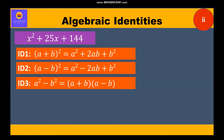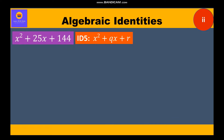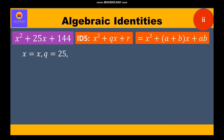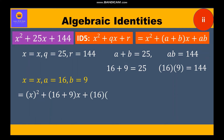Identity 3 has only two terms in the product whereas the given expression has three terms, so it is ruled out. Identity 4 involves three variables, so it is also ruled out. We are left with identity 5, with standard form x² + qx + r. Here q = 25 and r = 144. We need a + b = 25 and ab = 144. Since 16 + 9 = 25 and 16 × 9 = 144, the factors are (x + 16)(x + 9).